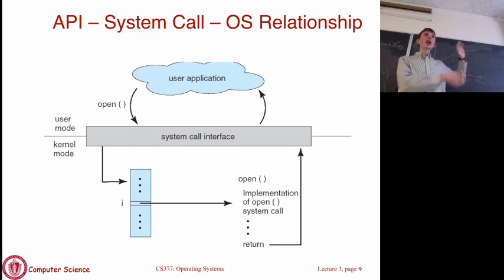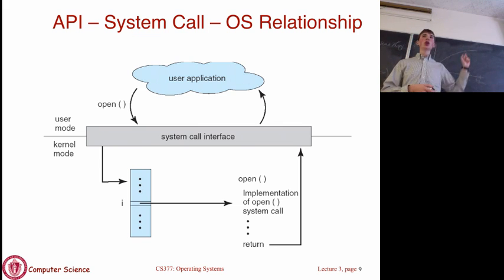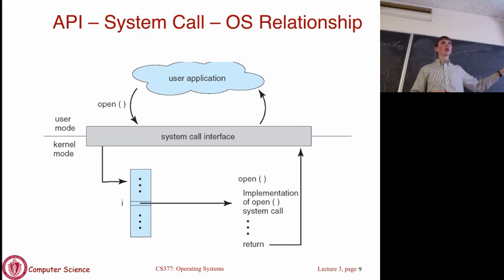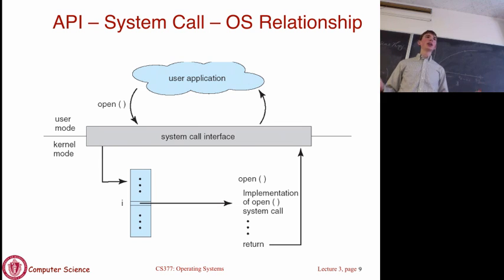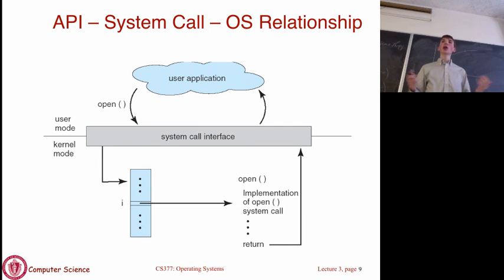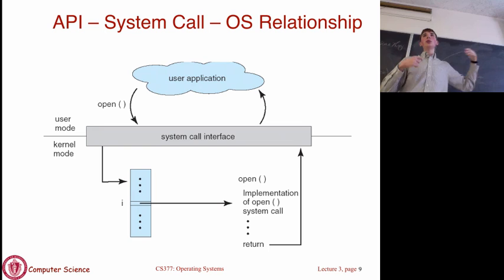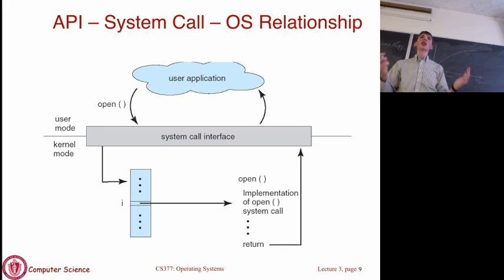You can't directly pass just a pointer to local memory because the user program is a separate process from the kernel. The kernel has an entirely separate address space. So what's the simplest way to pass a value without using a raw memory location? At the top of the cache hierarchy are registers—you can take parameters and stick them into registers, which the system call fetches and uses directly. That's straightforward, but there are limitations.